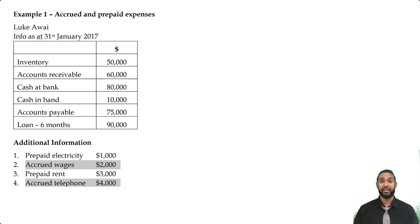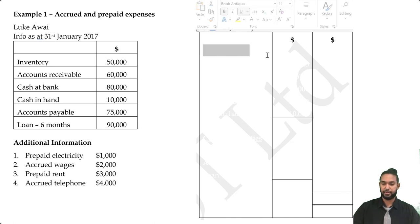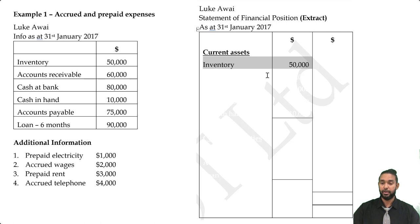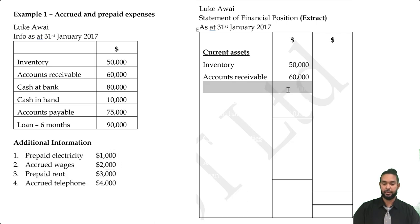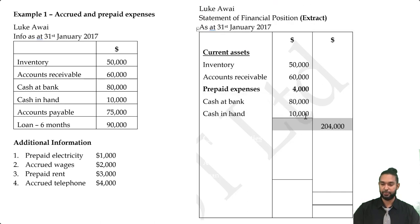Now let's look at the balance sheet extract showing just these two sections. Always head up your statements — name of the entity, name of the statement, and the period it applies to. We start the current assets section with inventory, as it's the most permanent current asset, followed by accounts receivable. We also have two prepaid expenses. Prepaid expenses go after accounts receivable but before cash at bank and cash in hand, since cash is already in liquid form.